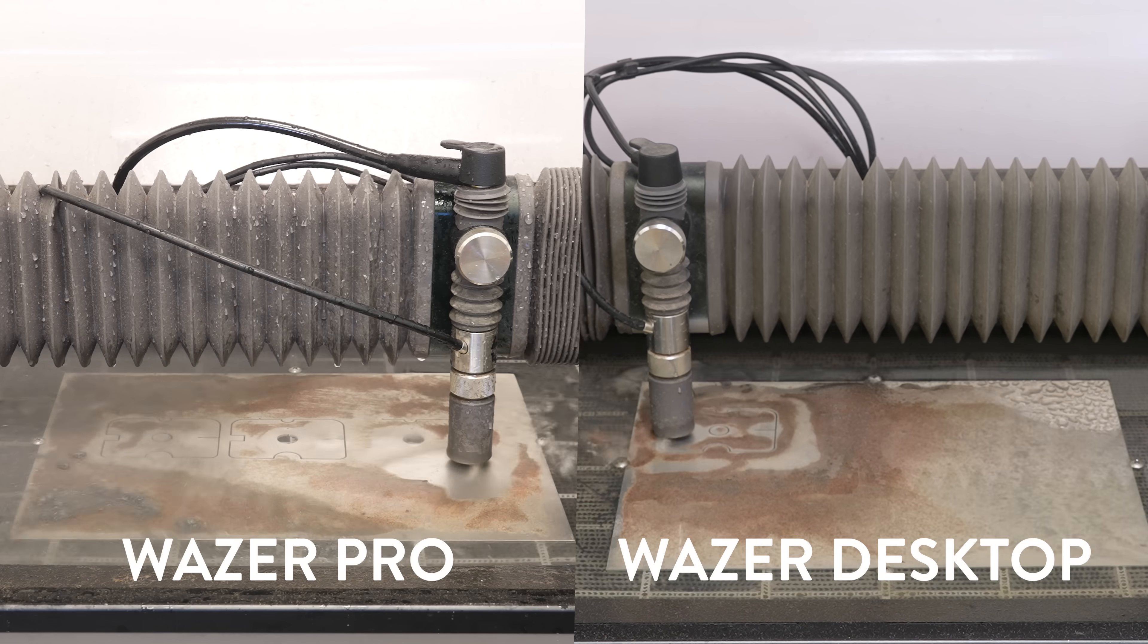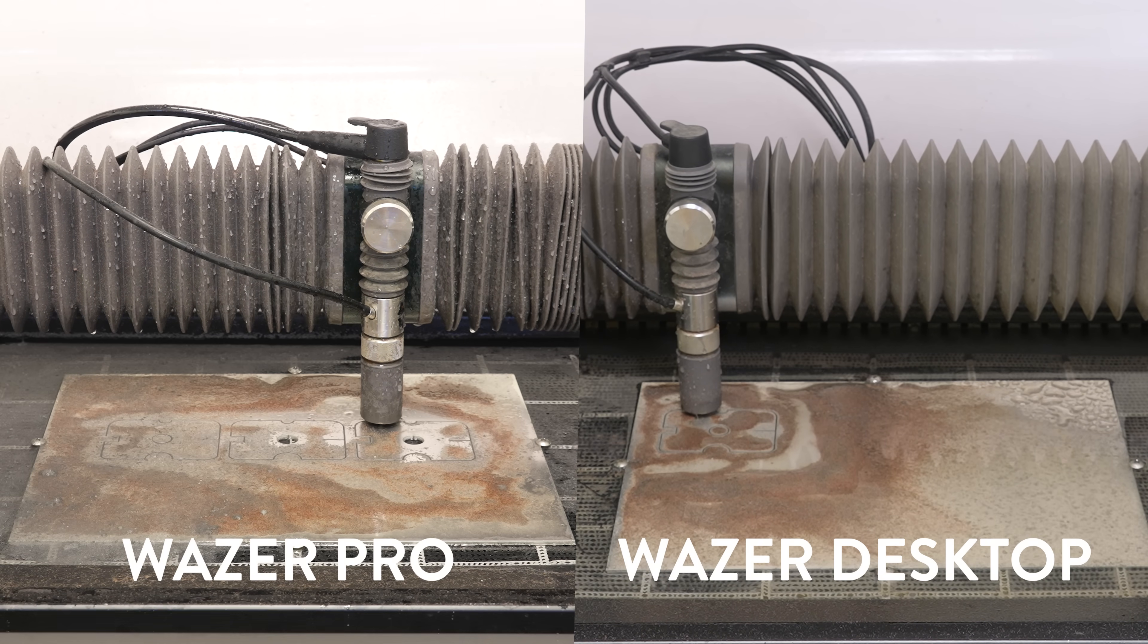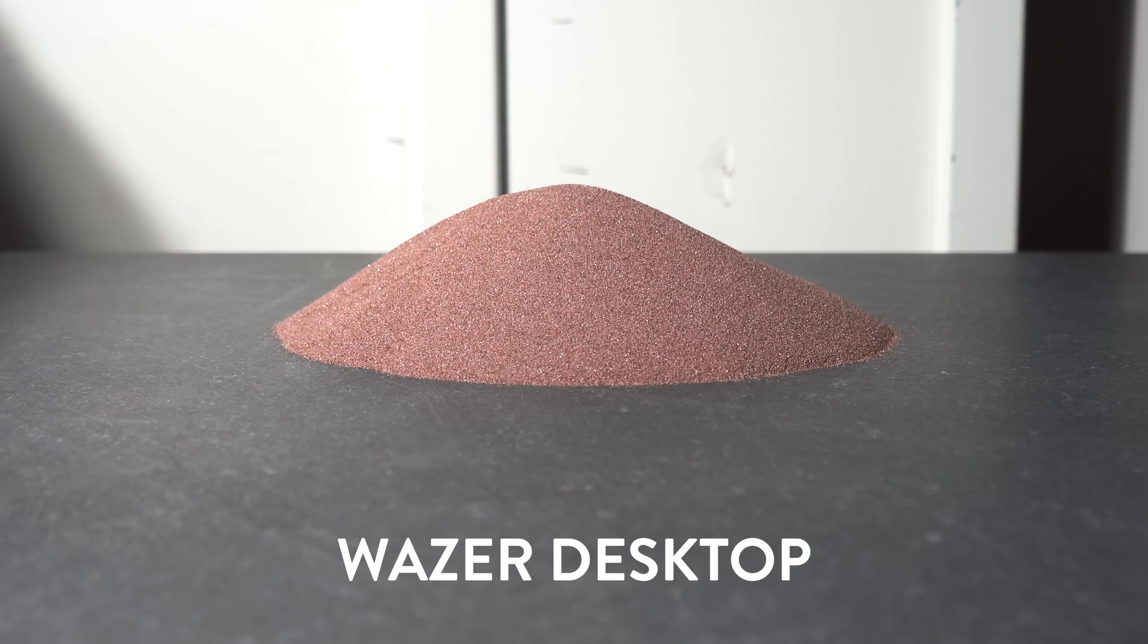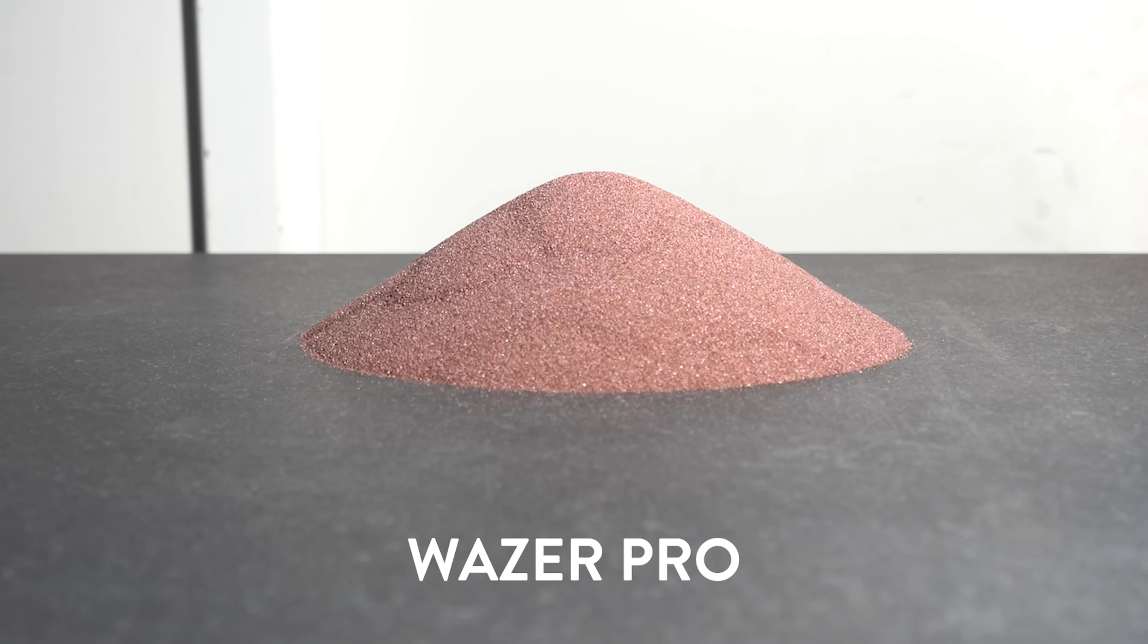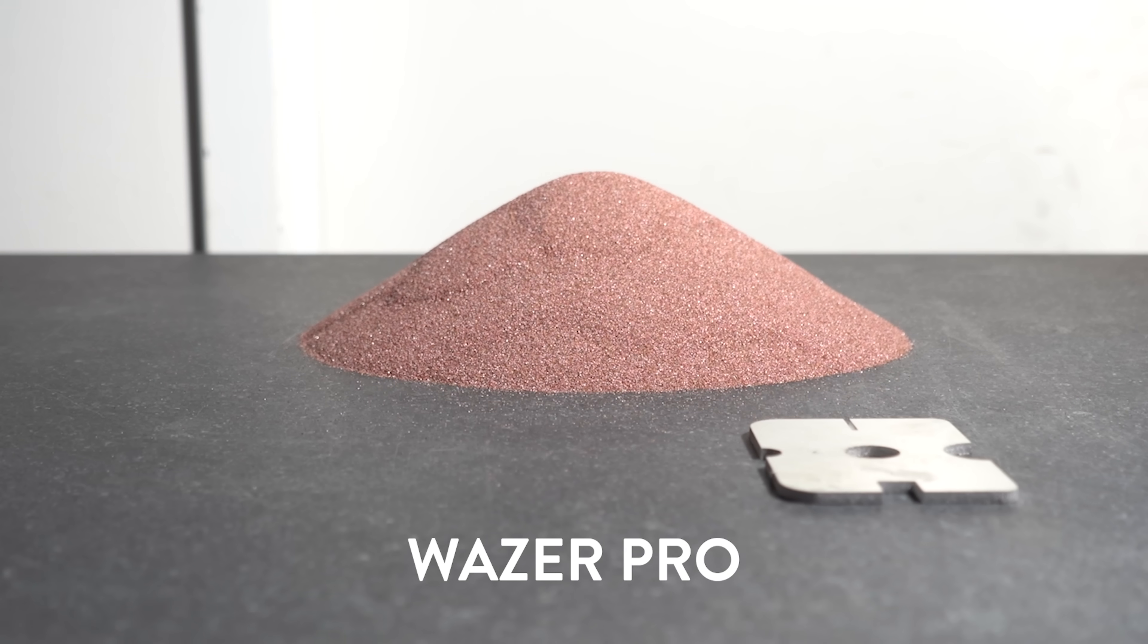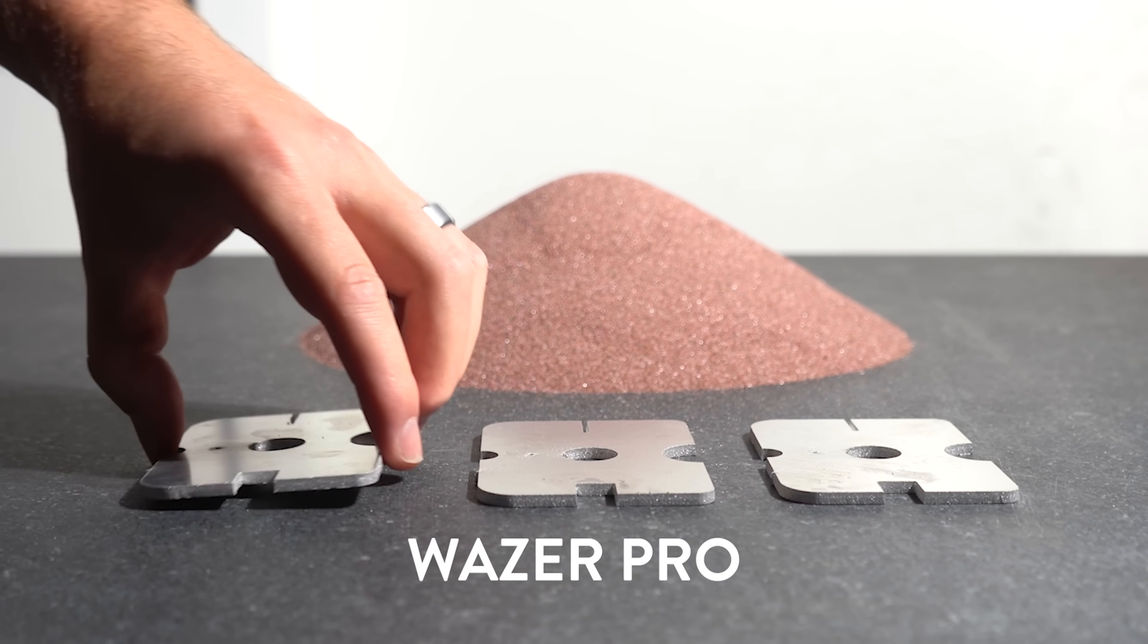In comparison to Wazer Desktop, which has less than half the hydraulic power, Wazer Pro cuts 3 times faster in thin metal, so it can produce 3 times as many 3mm aluminum parts in the same amount of time and using the same amount of abrasive.